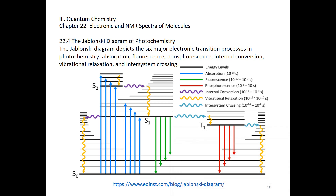Chapter 22: Electronic and NMR Spectra of Molecules, Section 22.4 — the Jablonski Diagram of Photochemistry. The Jablonski diagram depicts the six major electronic transition processes in photochemistry: Absorption, Fluorescence, Phosphorescence, Internal Conversion, Vibrational Relaxation, and Inter-System Crossing. Now let's examine this Jablonski Diagram.